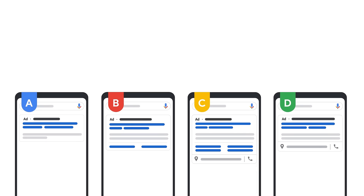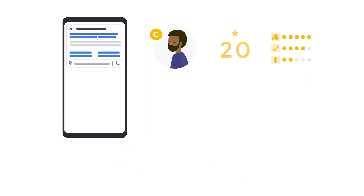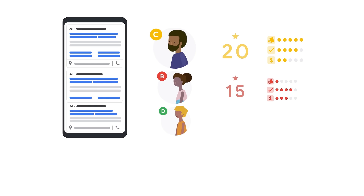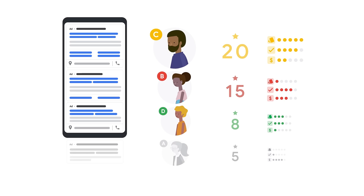In what order will the ads appear? Since Advertiser C has the highest rank, their ad will show first. Advertiser B will appear second, Advertiser D will appear third, and Advertiser A might not enter the auction at all, since their ad rank is too low.